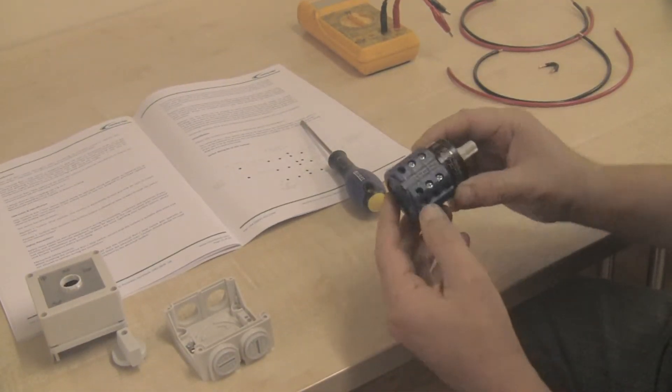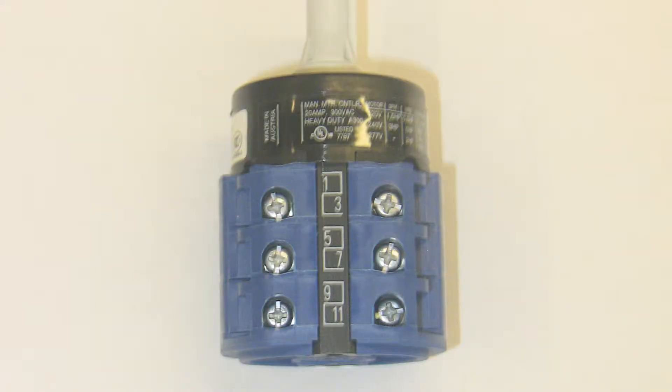Right, the important thing to note is the pin numbers. We've got pin 1 refers to the pin on the left, pin 3 refers to the pin on the right. The same, pin 5 refers to the pin on the left, pin 7 to the right, pin 9 to the left, pin 11 to the right.